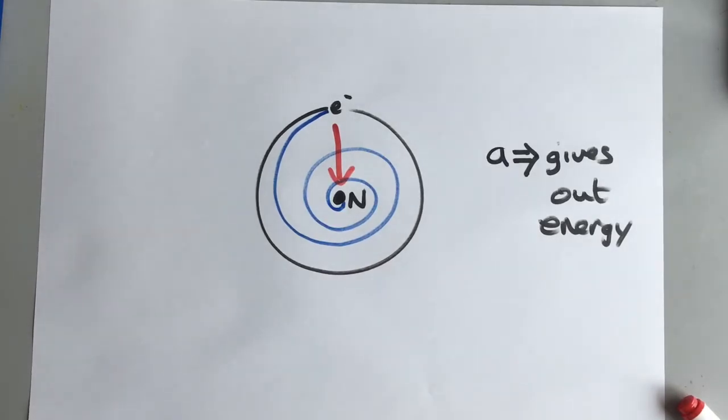Electrons should not be allowed to orbit nuclei by the rules of classical physics. Now obviously this is wrong. We know that there are electrons. We see it if we've ever done any sort of chemical experiment. We know that there are electrons and they interact with each other and that's why we get chemistry at all. So what is happening here?